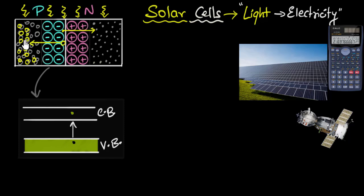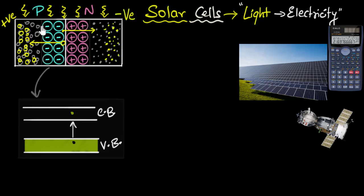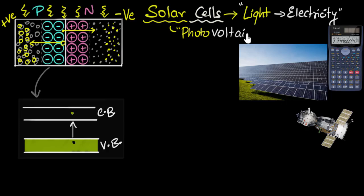When holes accumulate on the p-type side, a lot of positive charge builds up there. If you think in terms of electrons: holes are the absence of electrons, so electrons are being removed from this side, leaving positive charge. Meanwhile, electrons pile up on the other side, making it negatively charged. A voltage is generated between these two sides — this is how solar cells use light to generate voltage, and that's what we call the photovoltaic effect. The name makes sense: we're using photons to generate voltage.